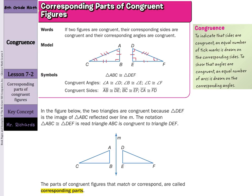The parts of congruent figures that match or correspond are called corresponding parts. When we have triangle ABC being congruent to triangle DEF, you can use that order to help you. When you look at the angles, A is the first listed, then D, so angle A corresponds with angle D. Angle B and E are in the middle and both happen to be right angles, so those are also corresponding and congruent. With C as the last one, as is F, we'll have the three arc marks for C and F saying that those are congruent.